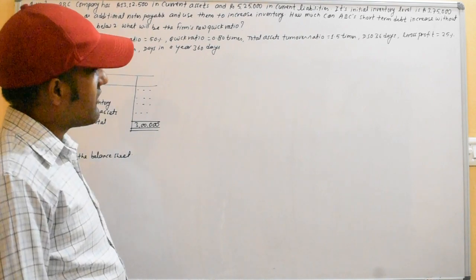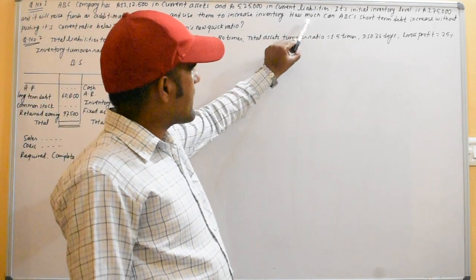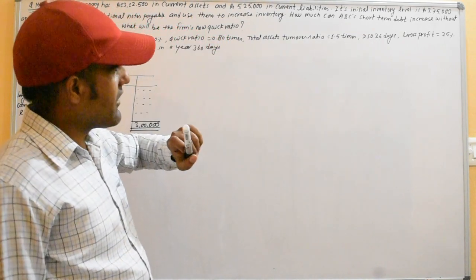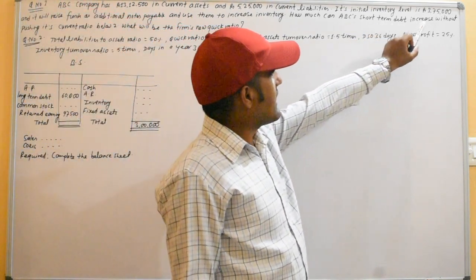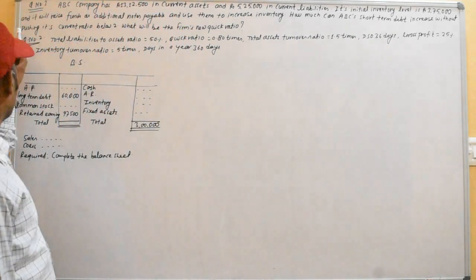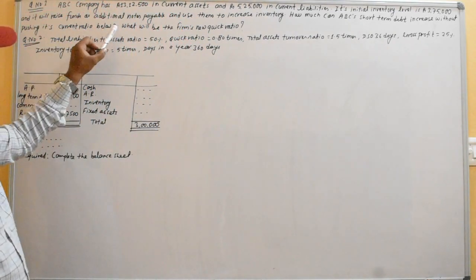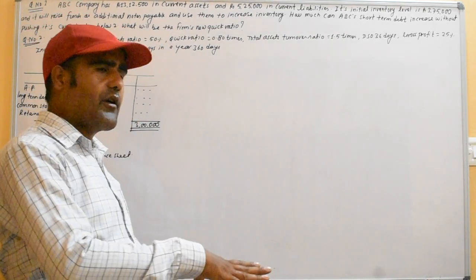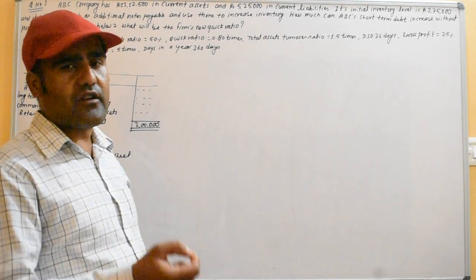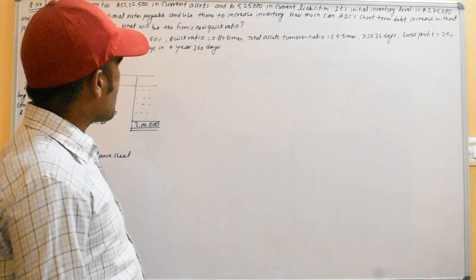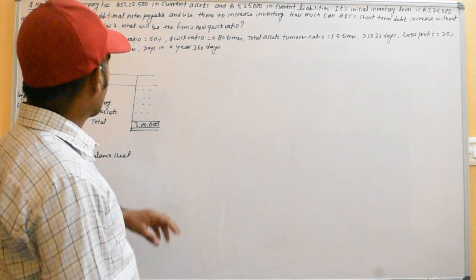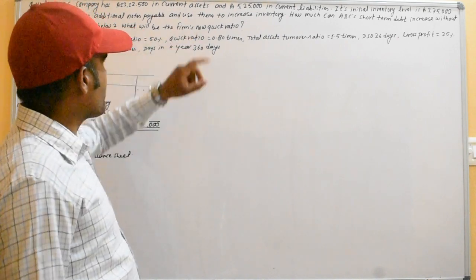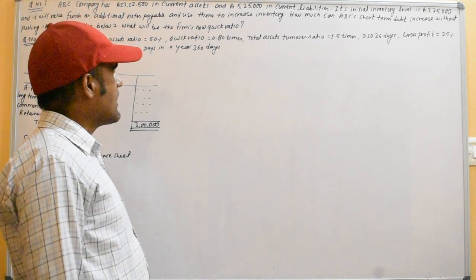How much can ABC's short-term debt increase without pushing its current ratio below 2? We also want to find what the new quick ratio will be.